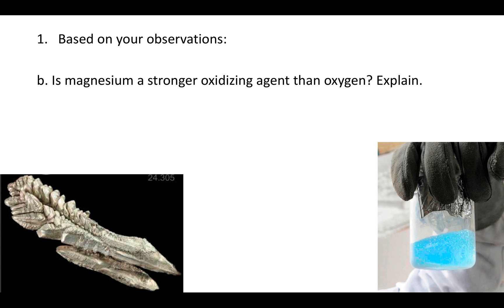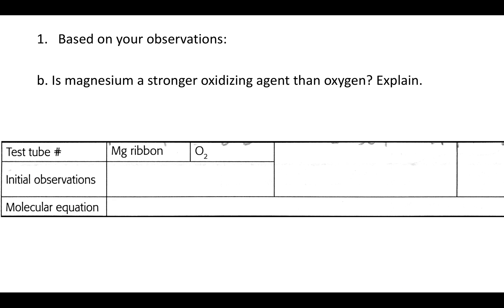Part B says: is magnesium a stronger oxidizing agent than oxygen? And explain. In the bottom left I have a picture of magnesium and on the bottom right a picture of liquid oxygen. You're going to look at the reaction where you burned a magnesium ribbon in a Bunsen burner, so it reacted with the oxygen in the air. Write out the molecular equation for it, and write the oxidation numbers for each element in the reactants and in the products.